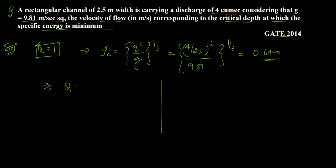We can calculate critical velocity two ways. Using the continuity equation, discharge equals area times velocity. At the critical section, the discharge is constant. So: Q = A × Vc = B × Yc × Vc. For a rectangular channel, the area of the critical section is B multiplied by Yc.